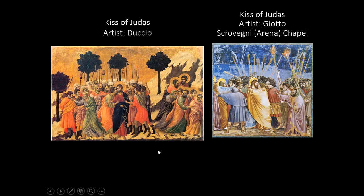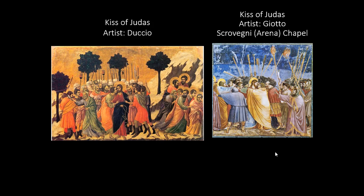For example, take a look at the kiss. In Duccio, we've got this kind of awkward side kiss on the cheek — not a lot of eye contact, and there seems to be a psychological separation between Judas and Jesus. But in Giotto, you've got Jesus and Judas just staring right at each other. Judas is puckering up to kiss Jesus, and Jesus is calling him out simply by looking at him. You get this sense of tension and psychology happening between the two. This type of intense psychology has not been seen in the history of art since the Greek Hellenistic period, hundreds of years prior.